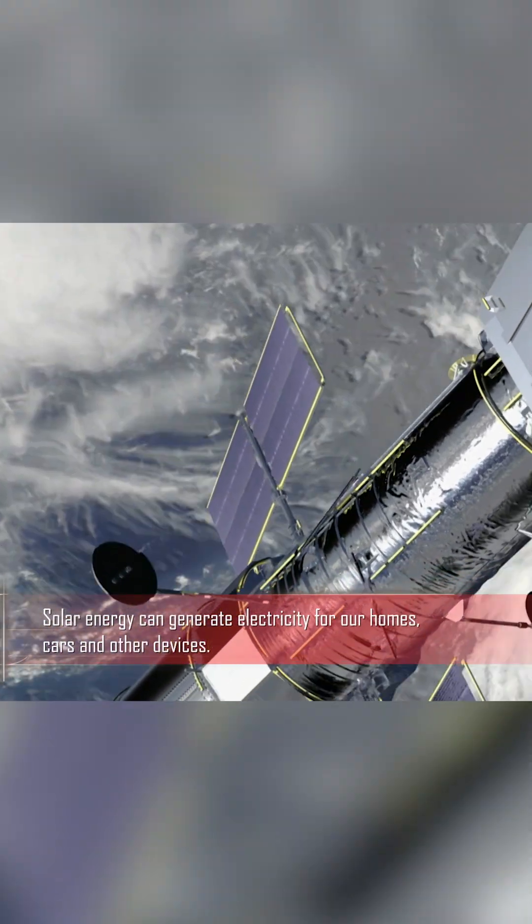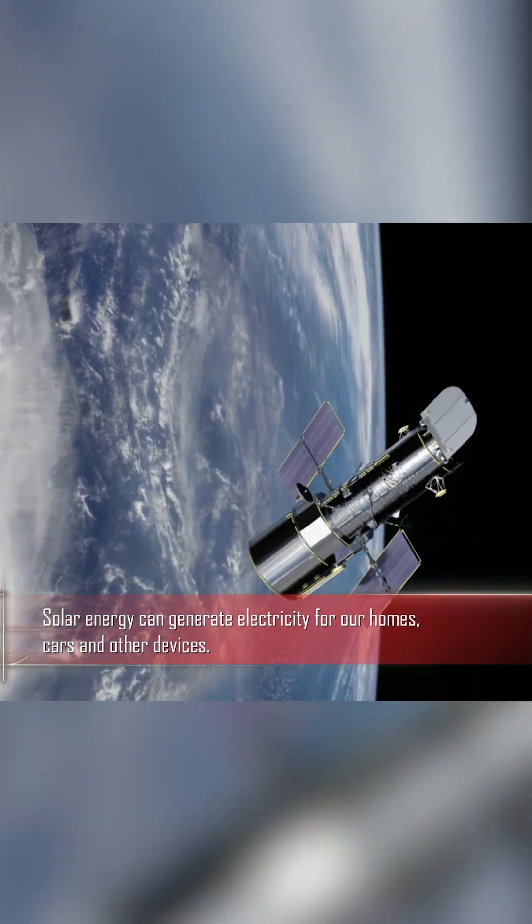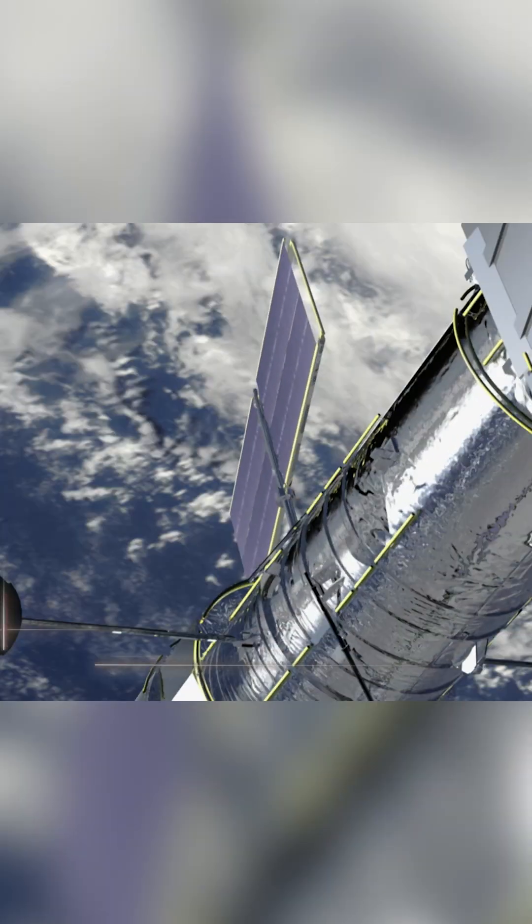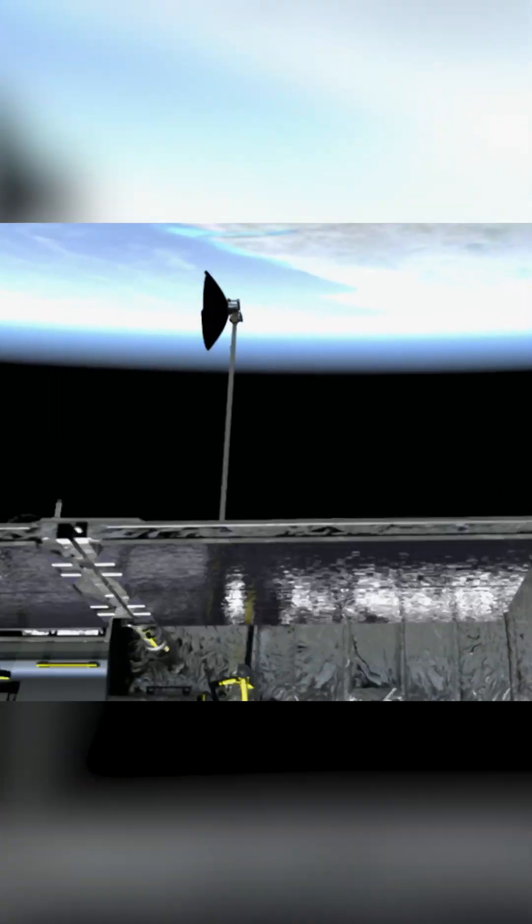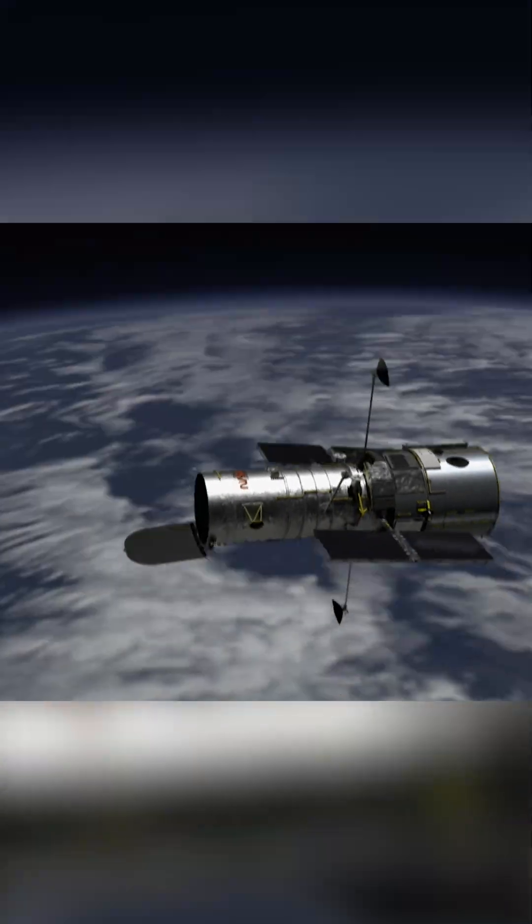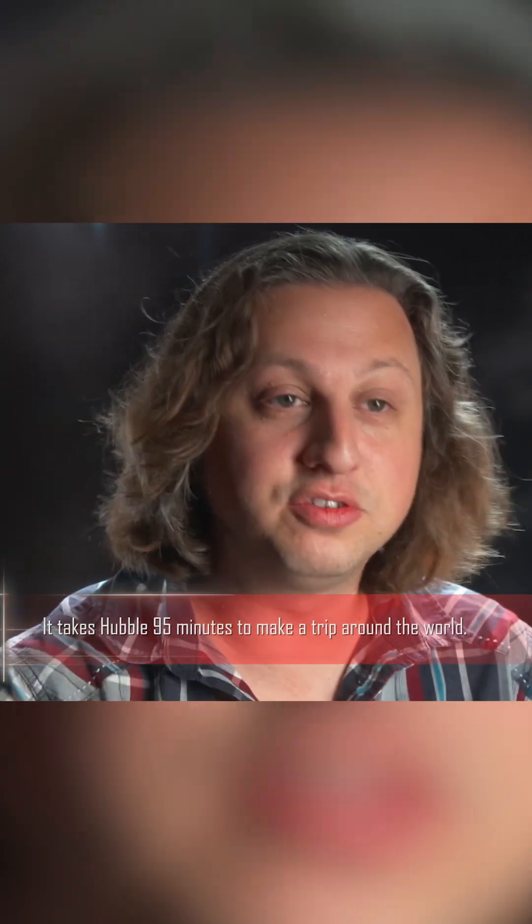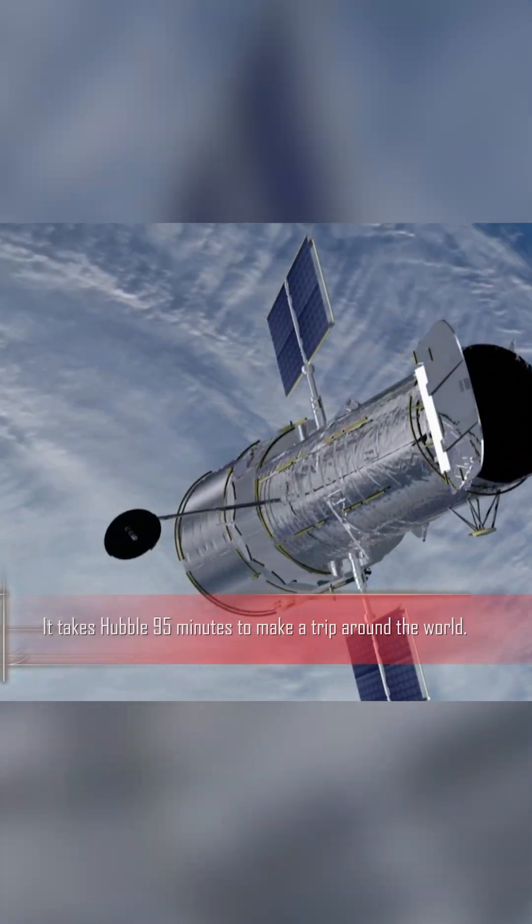The Hubble Space Telescope is not only big in size and low on energy, it's also fast. It travels around the Earth in its orbit at about 20,000 kilometers per hour, about 10,000 miles per hour, and it orbits the Earth every hour and a half.